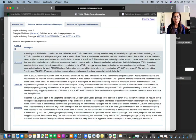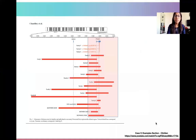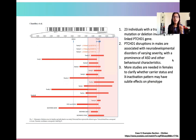One important study in this example is by Chaudhary et al. in 2015. In this study, 23 individuals were studied who had truncating mutations or deletions of the X-linked PTCHD1 gene. They noted that PTCHD1 disruptions in males are associated with a neurodevelopmental phenotype of varying severity with the prominence of autism spectrum disorder and other behavioral characteristics.